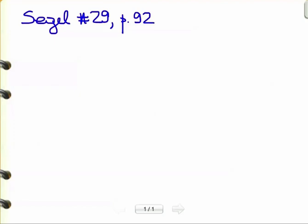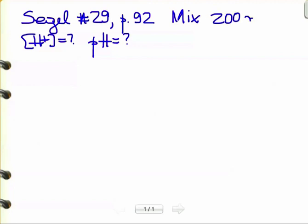Now let's solve problem 29, which appears on page 92 in Segal's biochemical calculations. It's another mixing problem. This time we are asking what are the final hydrogen ion concentration and the pH of a solution obtained by mixing 200 milliliters of 0.4 molar aqueous ammonium with 300 milliliters of 0.2 molar HCl.